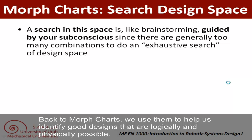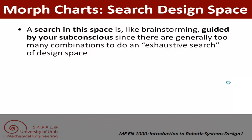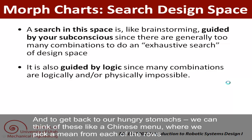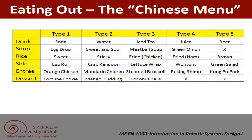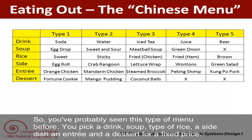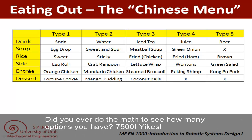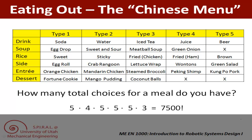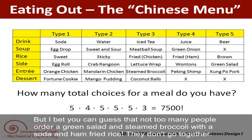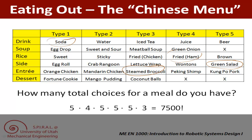Back to morph charts — we use them to help us identify good designs that are logically and physically possible. We can think of these like a Chinese menu where we pick a mean from each of the rows to assemble our design. You can pick a drink, soup, type of rice, a side dish, an entree, and a dessert for a fixed price. Did you ever do the math to see how many options you have? 7,500! But not too many people are going to order, say, a green salad and steamed broccoli along with soda and ham fried rice — those don't really go together. Similarly, you'll find that some combinations of means for your design are illogical.